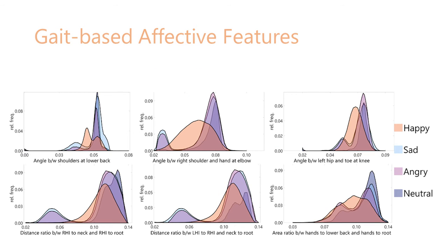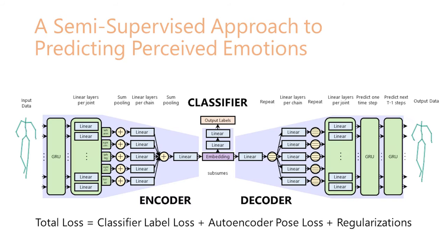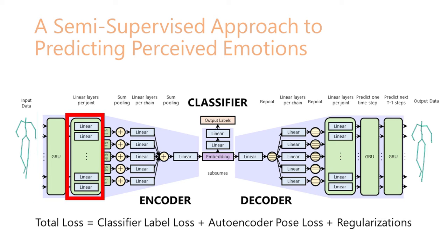We also show via conditional distribution plots that the values of these affective features are different for the different perceived emotion classes, implying that they make good candidates for differentiating between the emotions. We now give a detailed overview of our approach. We first pass the sequence of gait rotations on all the joints through a two-layer gated recurrent unit. Then, we pass the feature representations for all the joint rotations at the output of the GRU through individual linear units. Next, we pool the linear unit outputs for the two arms, the two legs, the torso in five separate linear layers following the kinematic chains of the human body.